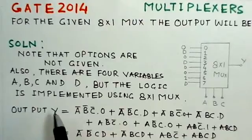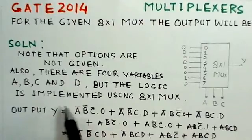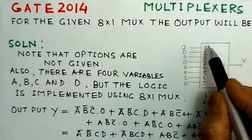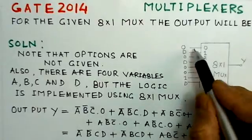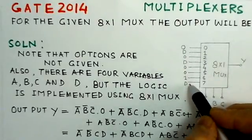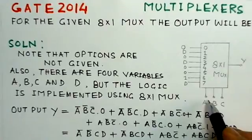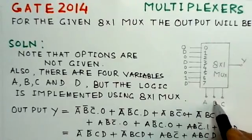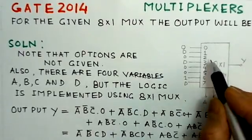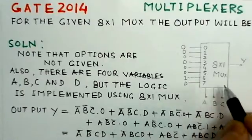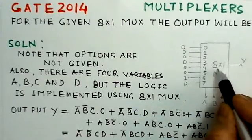In this particular type of multiplexer, see this multiplexer here, there are 8 inputs to this multiplexer and there are 4 variables A, B, C, and variable D. So there are 4 variables and the multiplexer is 8 to 1.